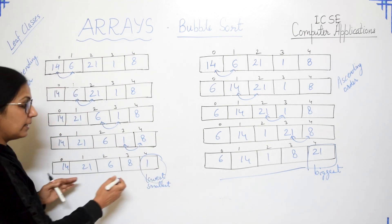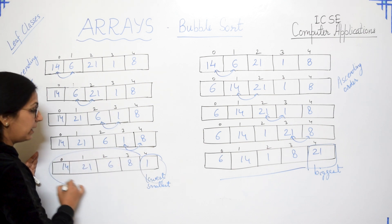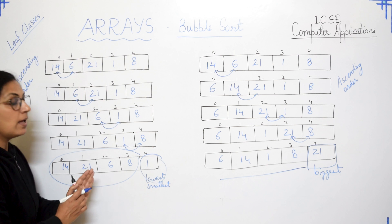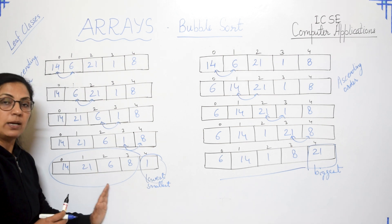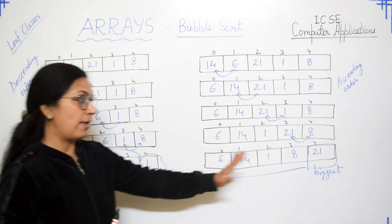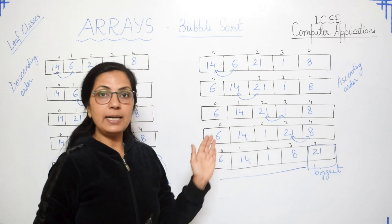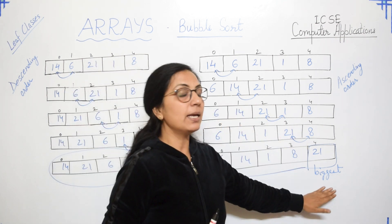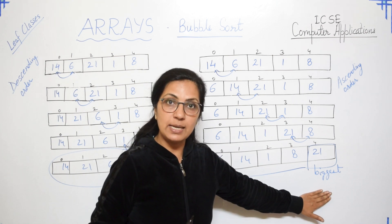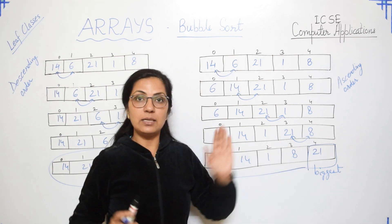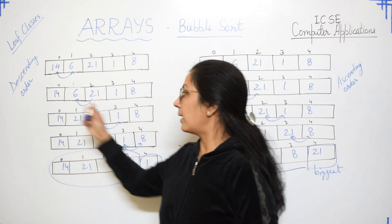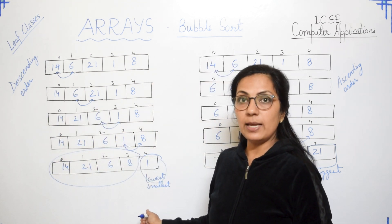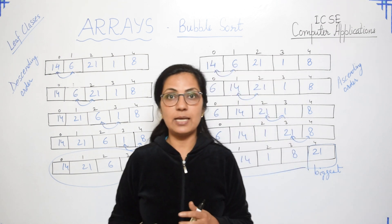After this, we repeat the process for the remaining elements and get the next smallest, then the next smallest like that. In ascending order, after one complete pass you get the biggest element towards the last side, and in descending order you get the smallest element in the last subscript of the array.